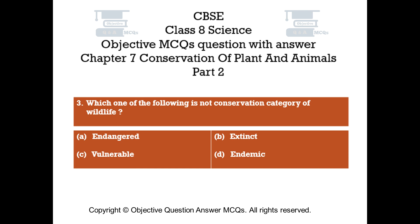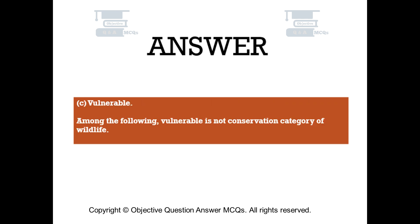Question number 3. Which one of the following is not a conservation category of wildlife? Option A Endangered, Option B Extinct, Option C Vulnerable, Option D Endemic. The right answer is Option C — Vulnerable. Vulnerable is not a conservation category of wildlife.